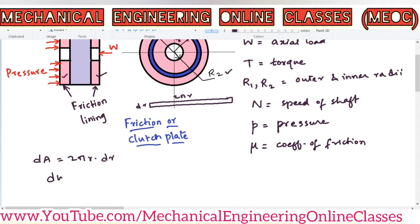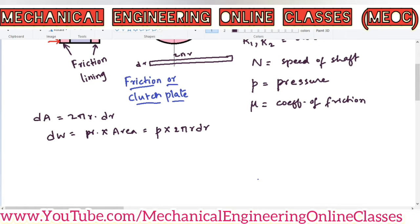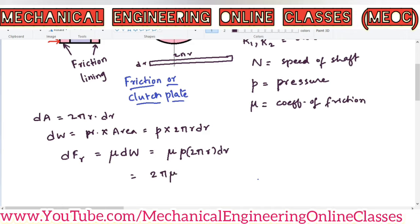dW is equal to pressure into area, so dW = P × 2πr dr. Similarly, the frictional resistance offered by the ring, dFR, would be mu into the normal reaction dW, giving dFR = 2π mu P r dr.